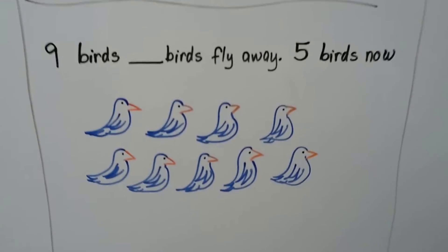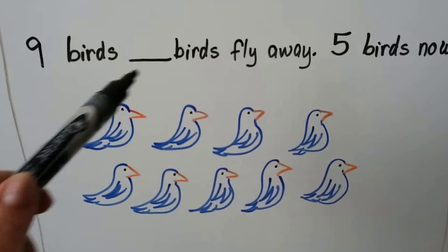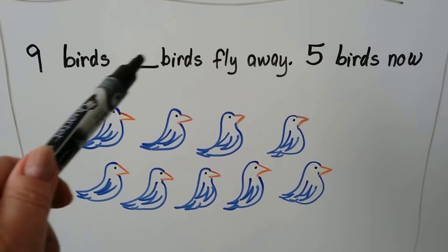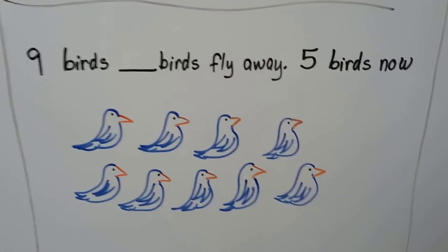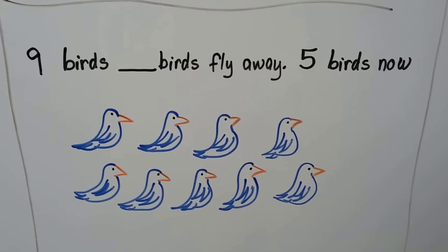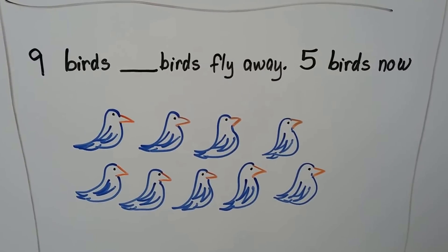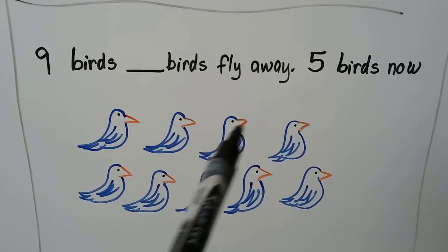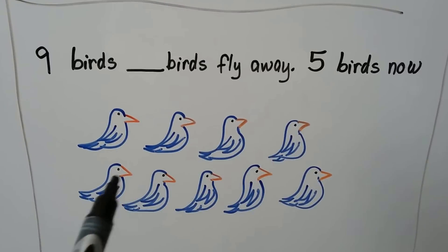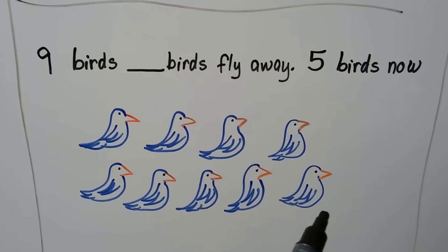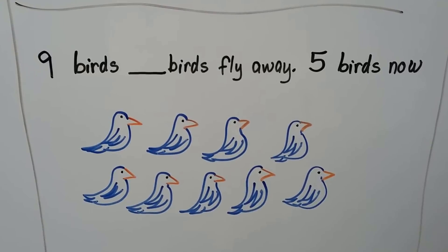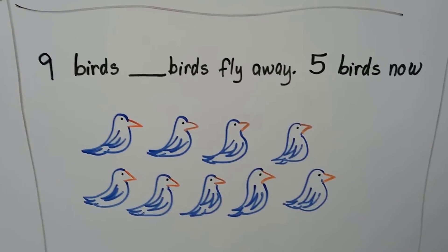Nine birds, and some number of birds fly away — five birds remain now. There are nine birds — one, two, three, four, five, six, seven, eight, nine. And there's only supposed to be five birds now.